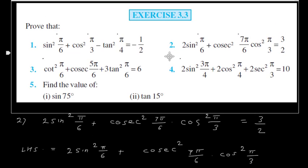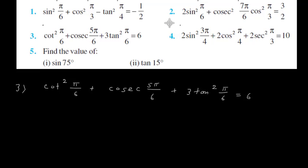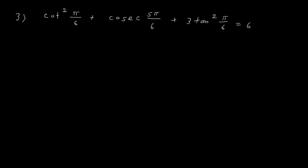Now let us see the third question: cot square pi by 6 plus cosec square 5 pi by 6 plus 3 tan square pi by 6 equals 6. We have to prove this. So here we will start with LHS.